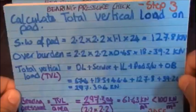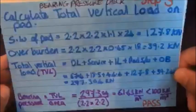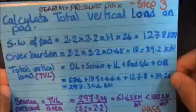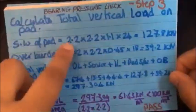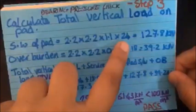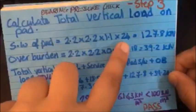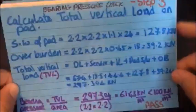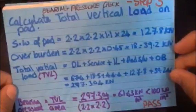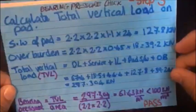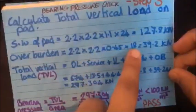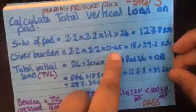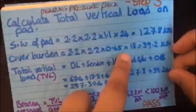And then you account for the total vertical load TVL. So let's go back to the self weight of the pad. As we've already specified the dimensions, it's the volume which is 2.2 by 2.2 by 1.1 depth times density of concrete, which is 24 kilonewtons per meter cubed, which gives you a total of 127.8 kilonewtons. Then for the overburden, you do the volume times the density of the soil. In this case, it's 18 kilonewtons per meter cubed. So we've got 2.2 by 2.2 by the height of the soil, which is 0.45 meters or 450 millimeters, times by 18 gives you 39.2 kilonewtons.